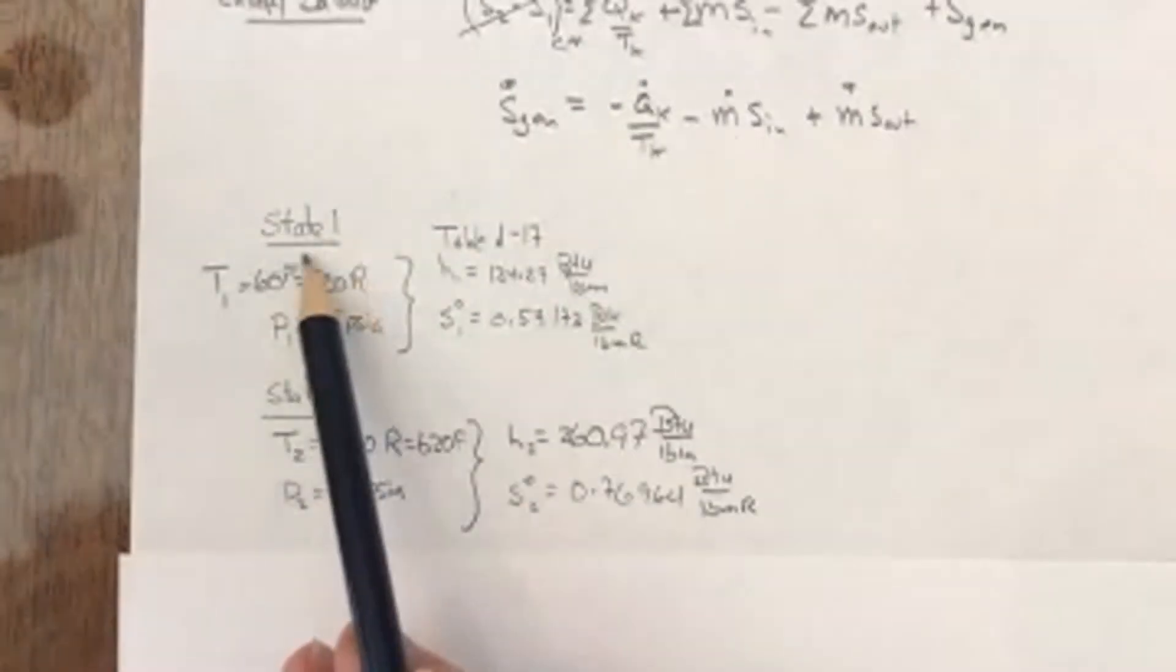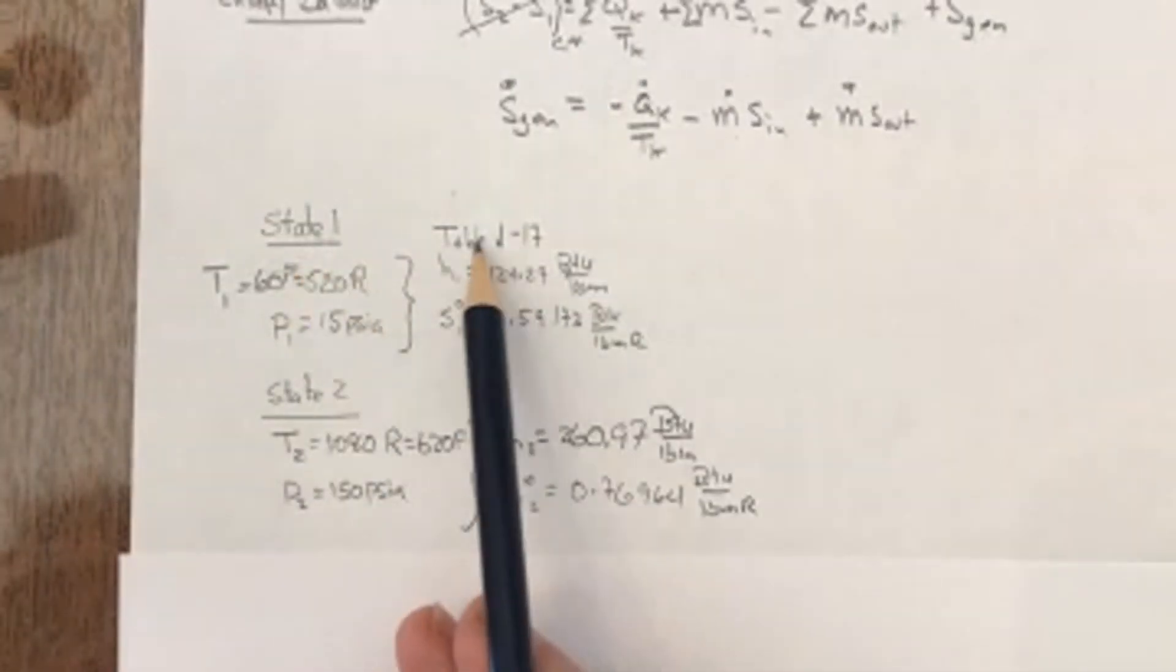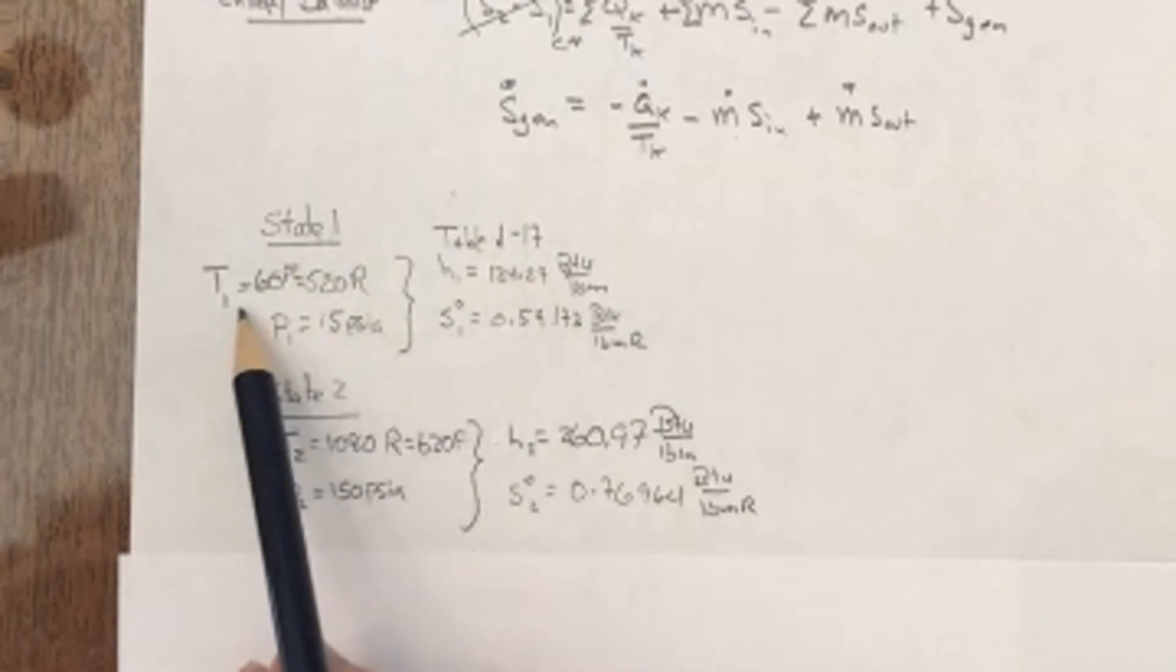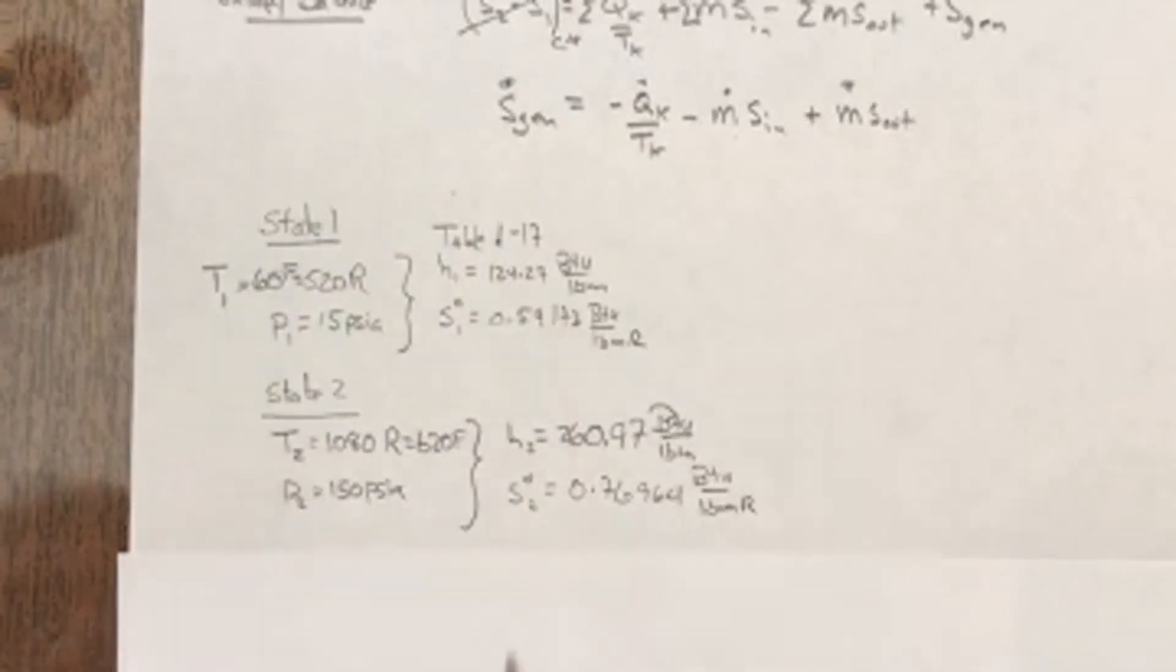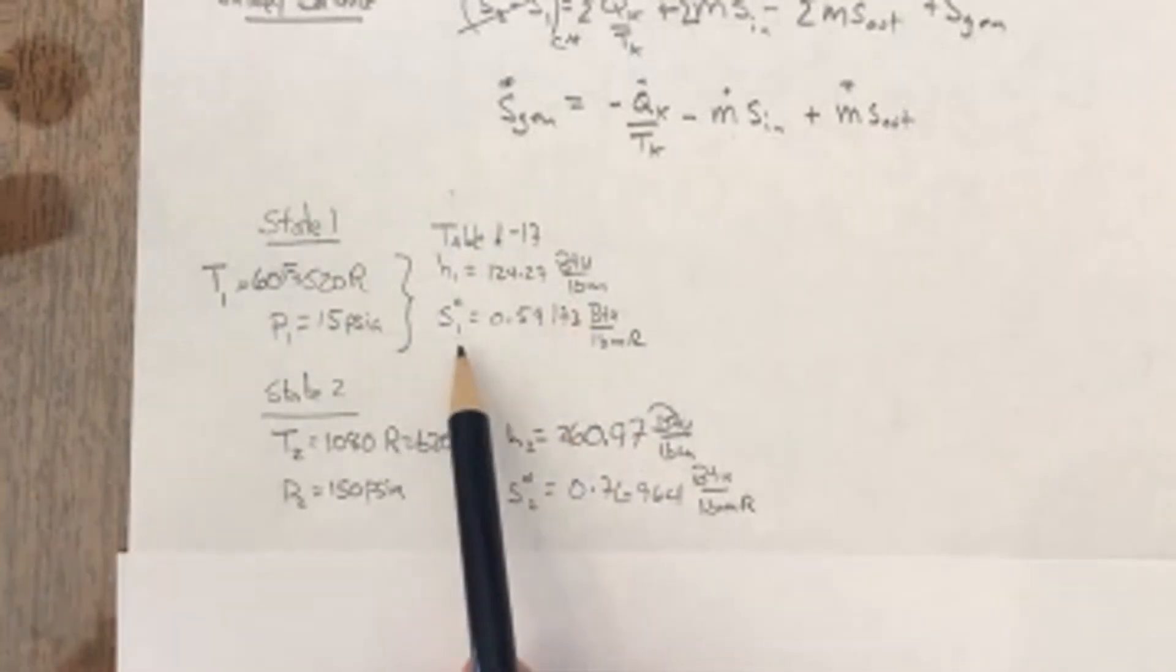So if I fix the states, I'm going to use table A17, because this is air, and at this temperature I can read off that H1 is going to be 124.7 BTUs per pound mass, and I'm going to get S0 degree, or S1 degree, off that table as well.